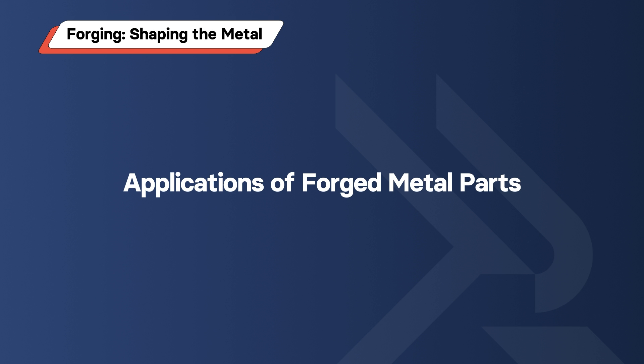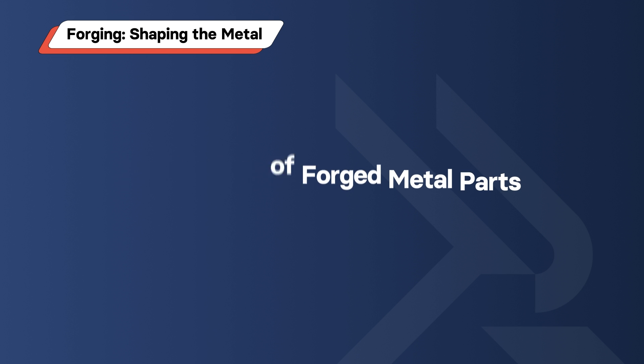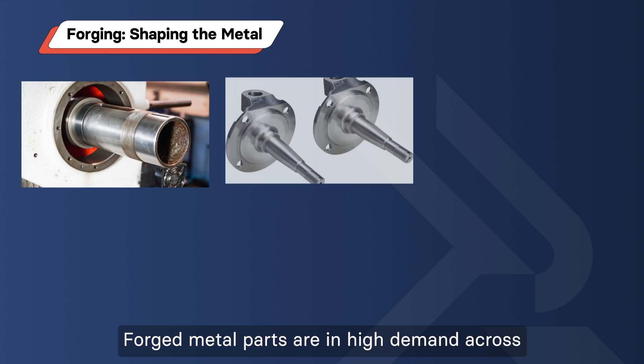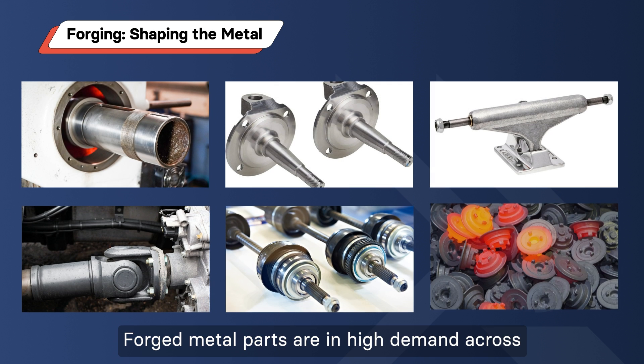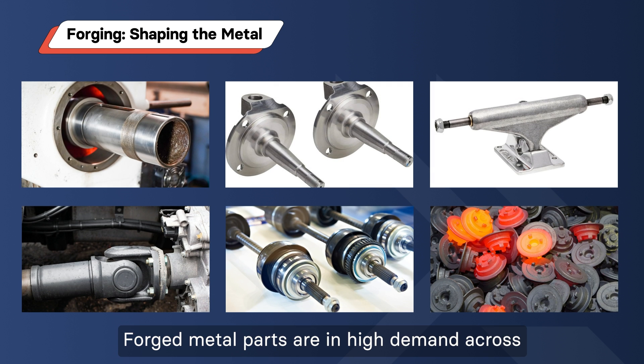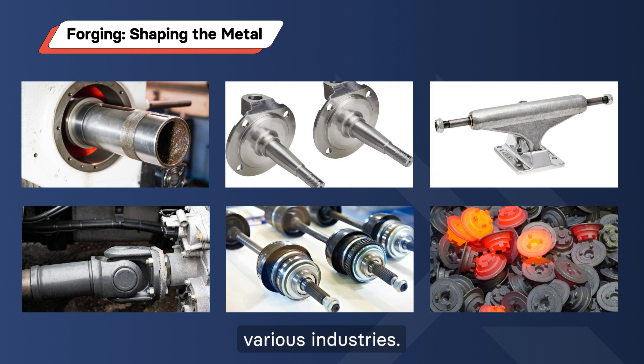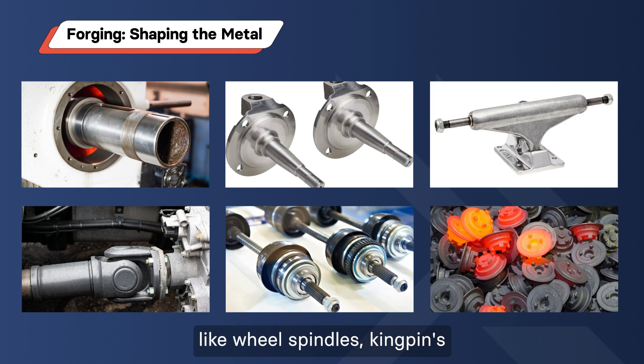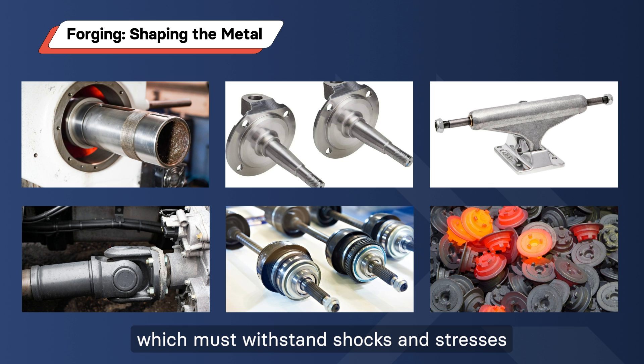Applications of Forged Metal Parts. Forged metal parts are in high demand across various industries. The automotive sector relies on them for components like wheel spindles, kingpins, shafts, and torsion bars, which must withstand shocks and stresses.